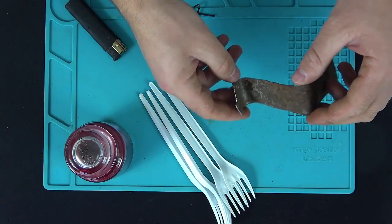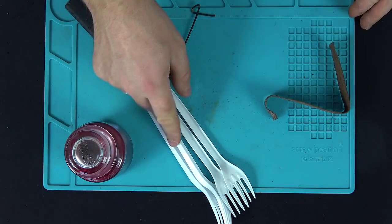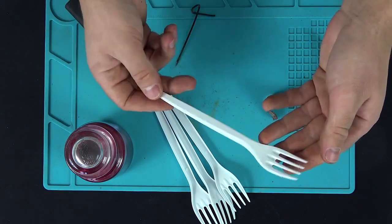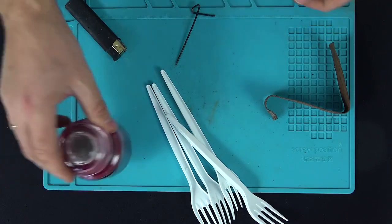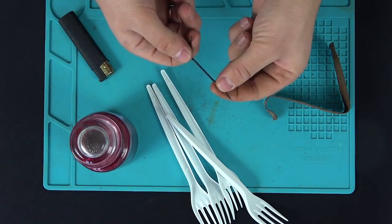As a result, we get such a small mold, literally made on the knee. Next, we will need these plastic forks or spoons in general, some plastic dishes. You will also need one candle, a lighter and an awl, or just a piece of flat wire.